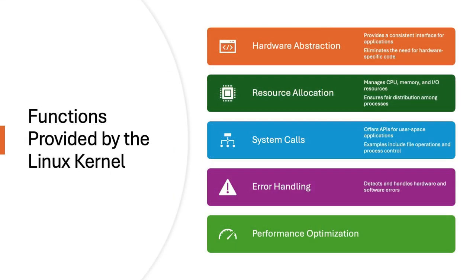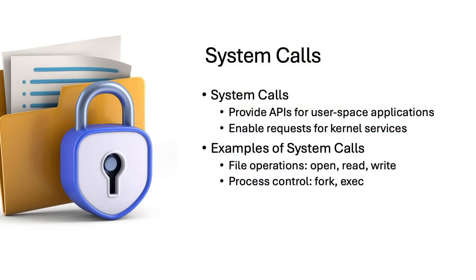Operating systems provide hardware abstraction, manage resource allocation, and offer system calls. They also handle errors and optimize performance. System calls provide APIs for user space applications to request kernel services. Examples include file operations like open, read, and write, and process controls such as fork and exec.